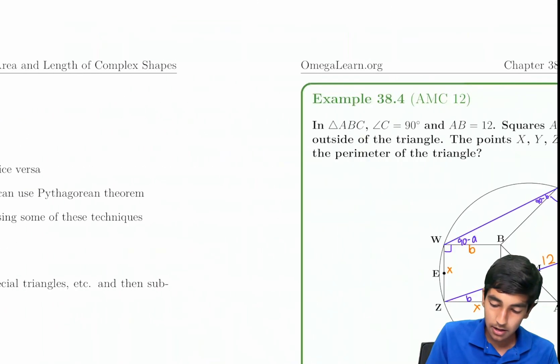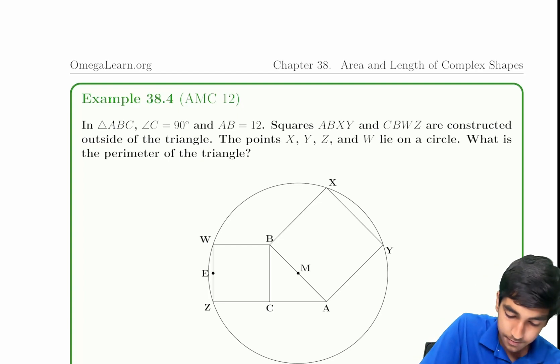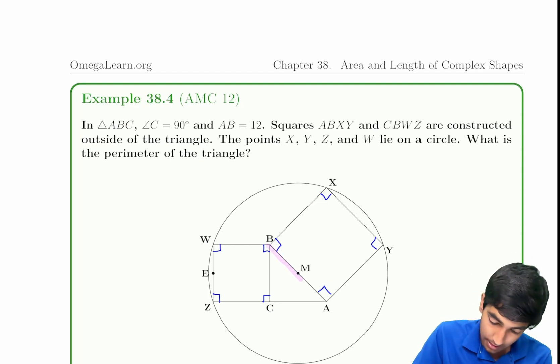Let's now take a look at a more tricky problem from the AMC. In triangle ABC, angle C has a measure of 90 degrees and AB has a measure of 12 degrees. Squares ABXY and CBWZ are constructed on the outside. The points X, Y, Z, and W lie on a circle. We're asked to find the perimeter of this triangle.